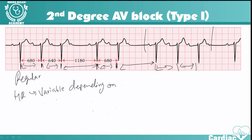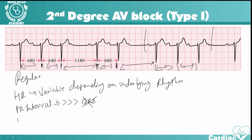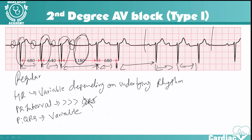For the PR interval: there is no set PR interval. The PR interval increases, increases, increases until there is a dropped QRS. For the P to QRS ratio: you have one P, one QRS for most beats, but then one P has no QRS, so it is variable — usually one-to-one but drops occasionally. The QRS duration is normal — 0.06 to 0.12 seconds — because there's no problem with conduction through the ventricles. The block is just at the AV node level.